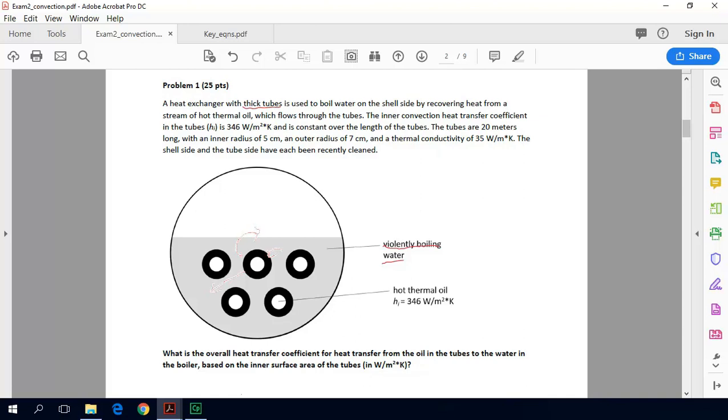When you have thermal resistances in series, heat first needs to convect, then conduct, then convect. We have no fouling, so we can neglect fouling. Our total thermal resistance equals the convective thermal resistance from the inside plus the conductive thermal resistance through the pipe wall. We can neglect the convective thermal resistance on the outside due to this violently boiling water. When they're in series you can just add them up. We're also going to use this relationship that R_total equals 1 over UA.